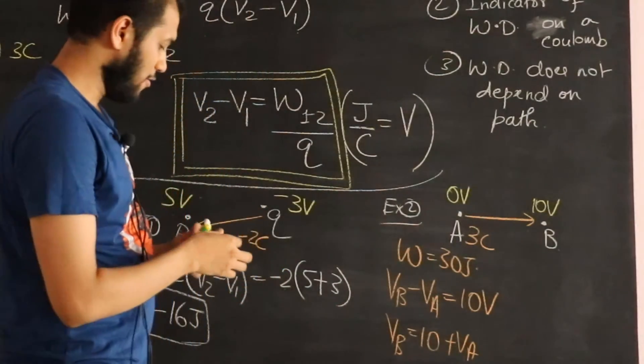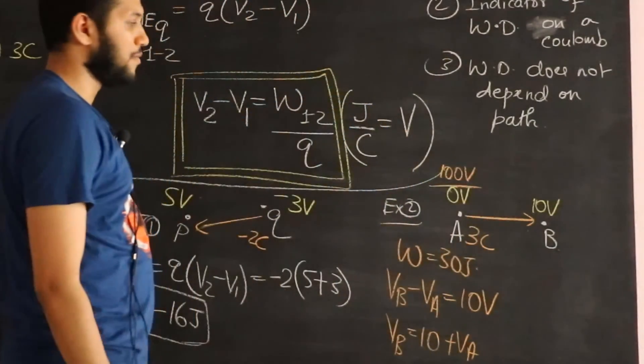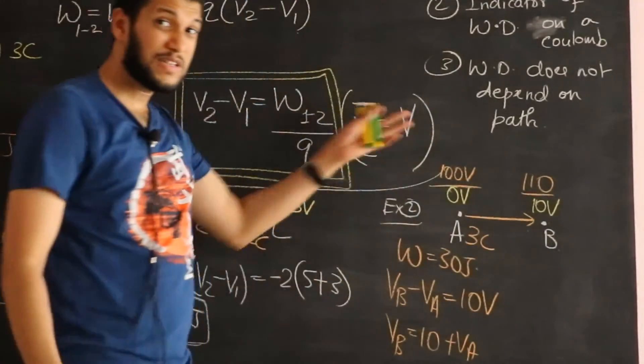Or I could also say VA is 100 volts for NAR and VB is 110 volts. And either one is fine.